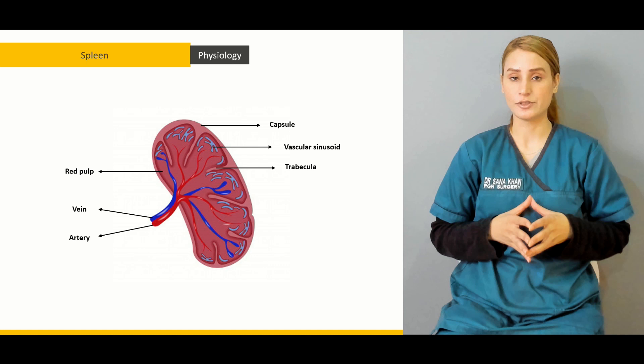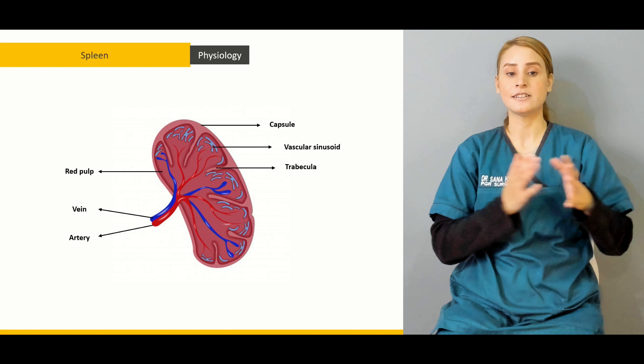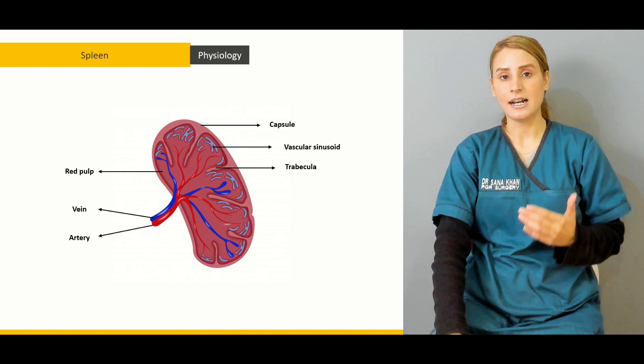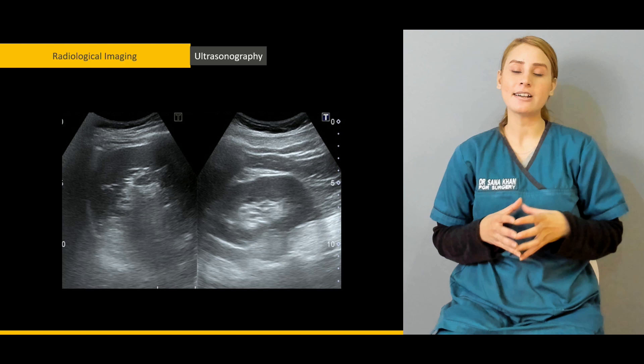We'll be talking in detail about the physiology — the proper capsulated spleen, the sinusoids, the trabeculae, the pulp, and the splenic hilum. And in splenomegaly, we'll cover which important structures of the spleen can be palpated by your finger.